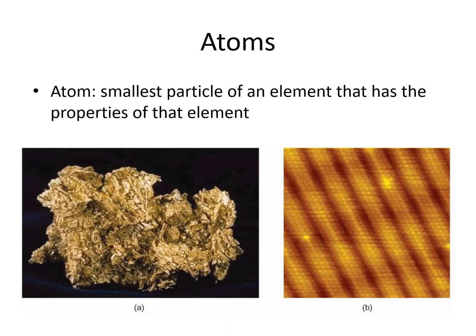Everything is made up of atoms. Atoms are the smallest particle of an element that has the properties of that element. We could have an atom of gold seen through a scanning tunneling microscope, or we could have a whole chunk of gold, and they would have the same properties. If we were to break the gold down below the level of the atom, however, it would no longer have the properties of gold.